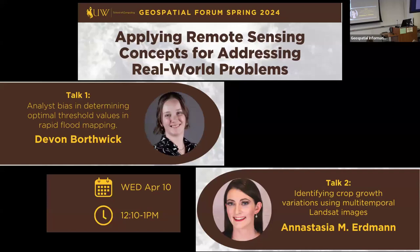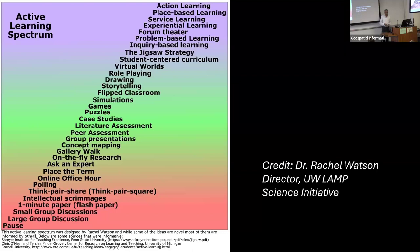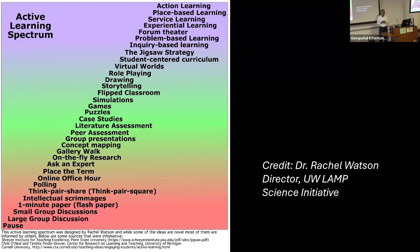Before I do that, I want to set the stage — the background of what motivated them, or what motivated me to encourage them to do this. You might have seen this graphic in many places. We always talk about active learning. This is a spectrum — the easiest thing you can incorporate in the classroom all the way up to the most difficult. I participated as a LAMP scholar in 2019 and learned about many of these techniques, and they encouraged us to incorporate them in our classroom.